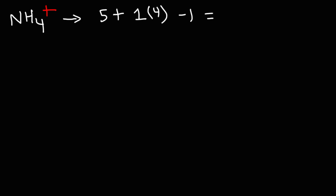And so we have 5 plus 4, which is 9. 9 minus 1 is 8. So there are 8 electrons in this Lewis structure.